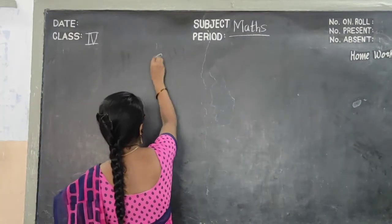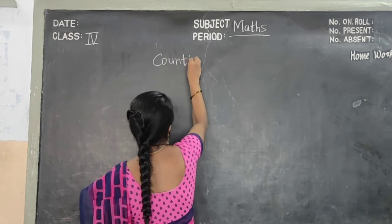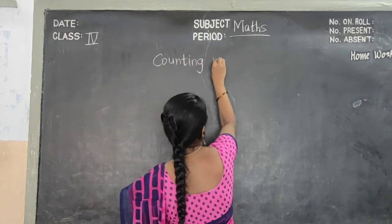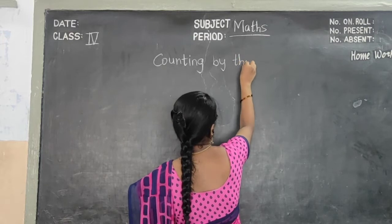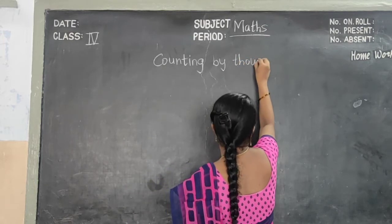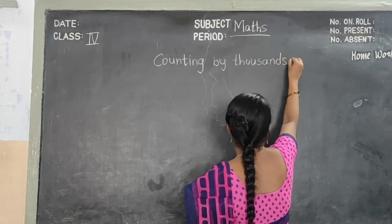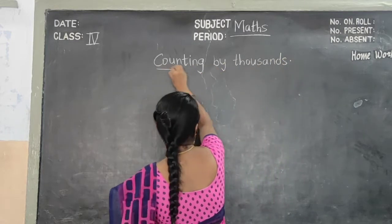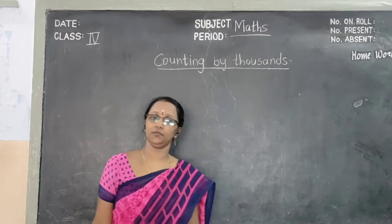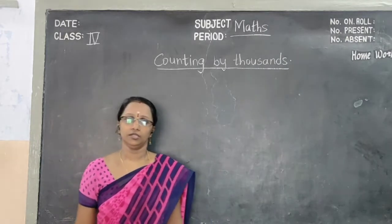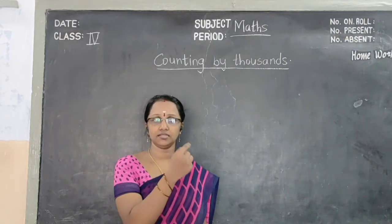What is our topic? Counting by 1000's. What is counting by 1000's? Do you remember, children? You know everyone — 1's, 10's, 100's, 1000's.